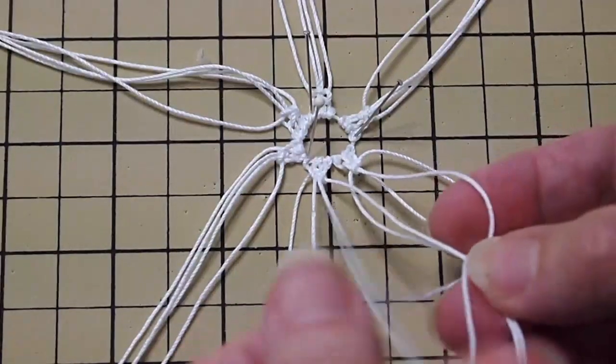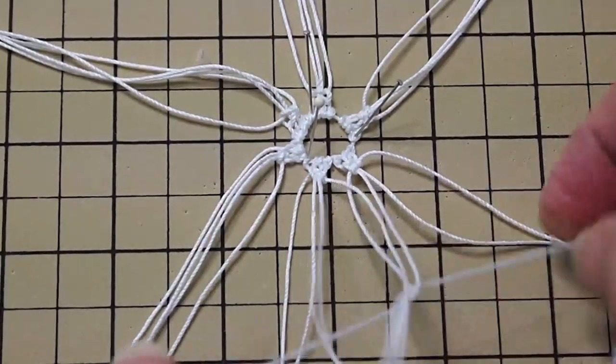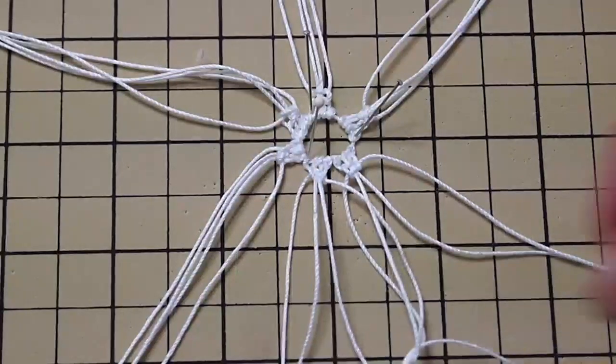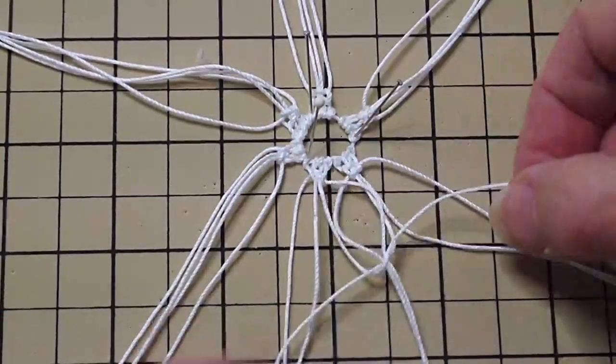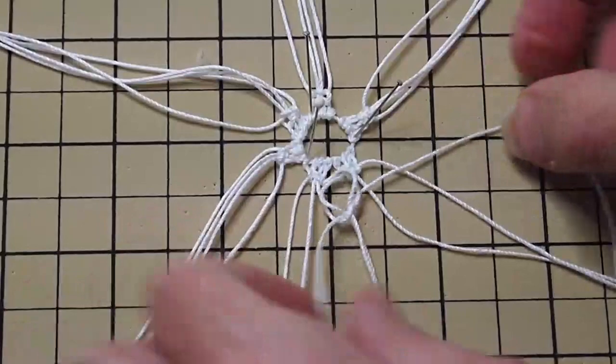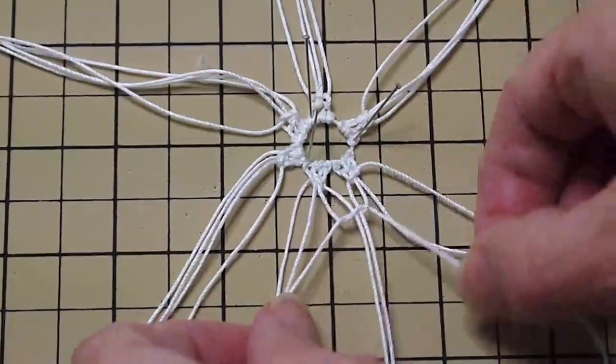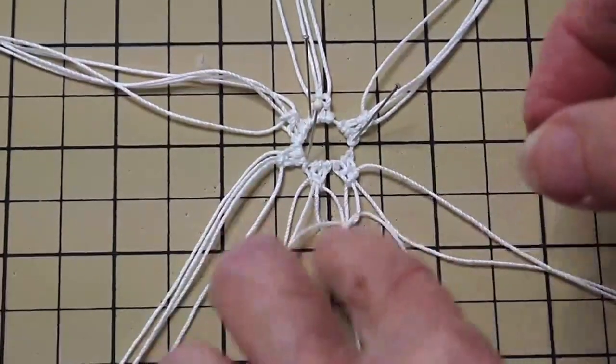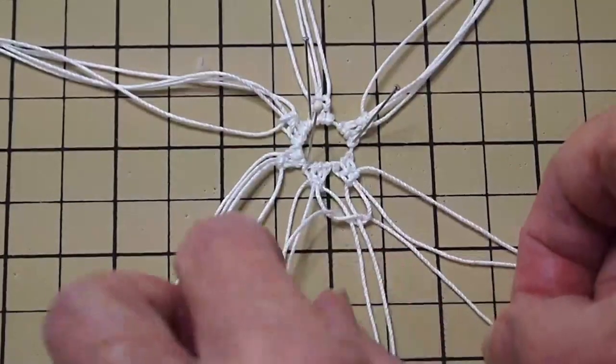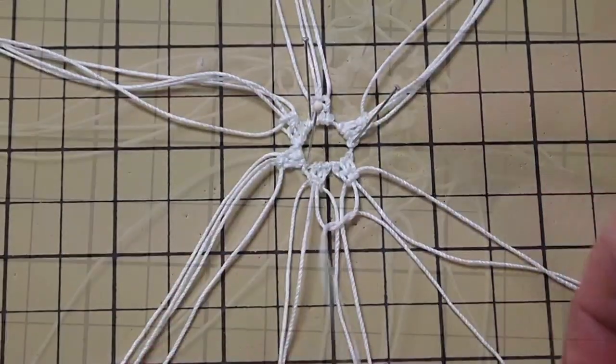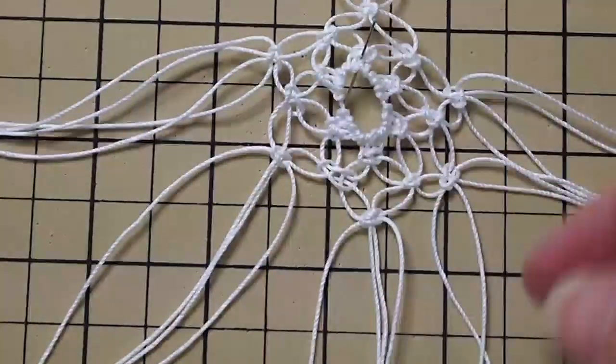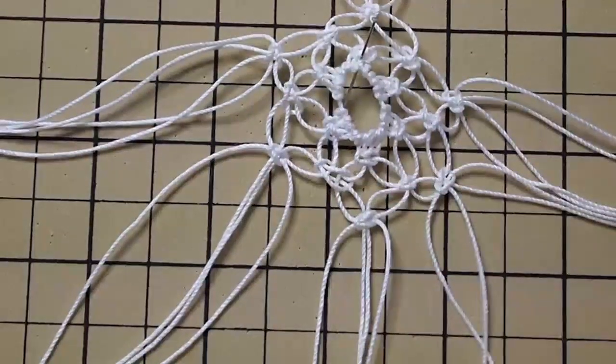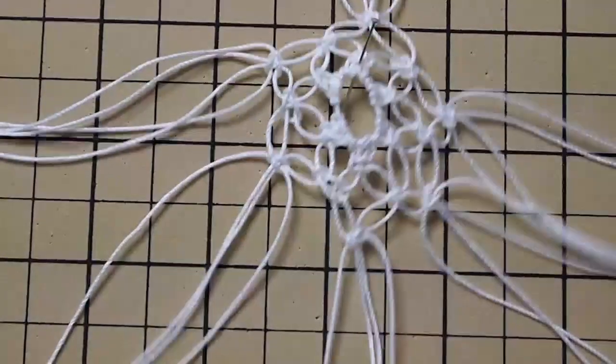So square knots again. You can make a lot of things with just knowing a few of the macrame knots. You know, they make bracelets and necklaces and placemats and wall hangings and all sorts of things. So it's a pretty fun craft and it's fairly simple.